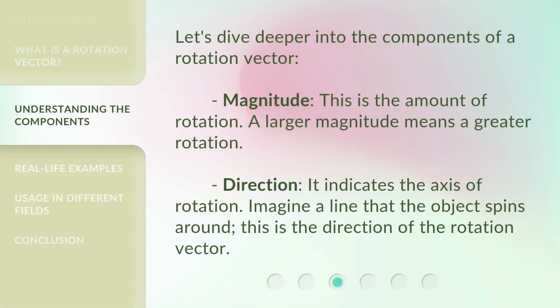Let's dive deeper into the components of a rotation vector. Magnitude: this is the amount of rotation — a larger magnitude means a greater rotation. Direction: it indicates the axis of rotation. Imagine a line that the object spins around; this is the direction of the rotation vector.